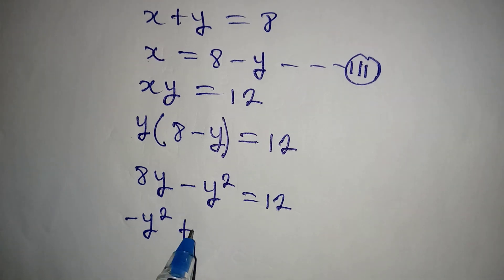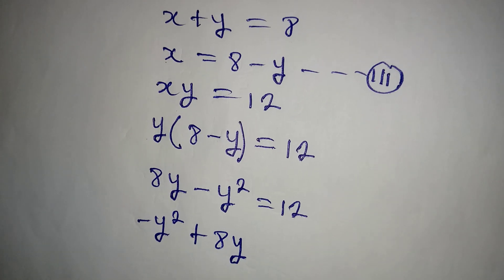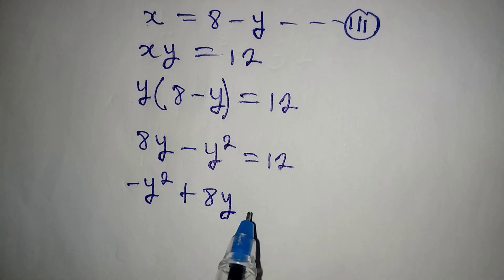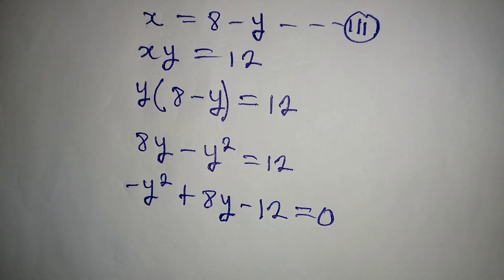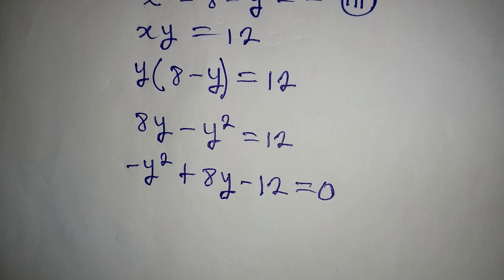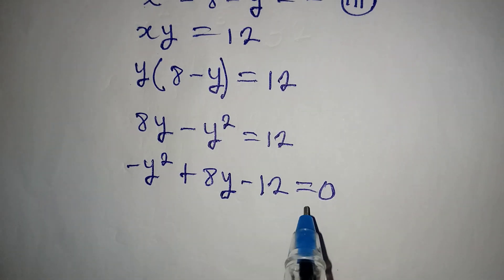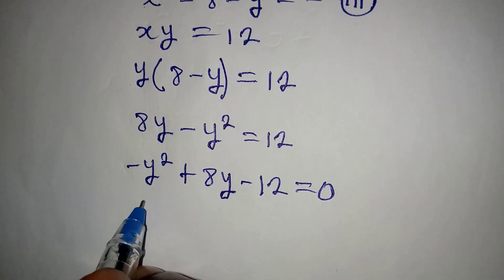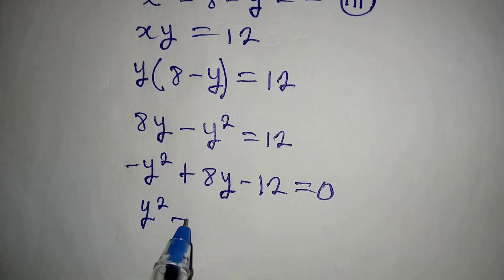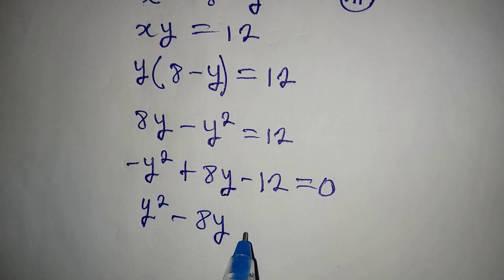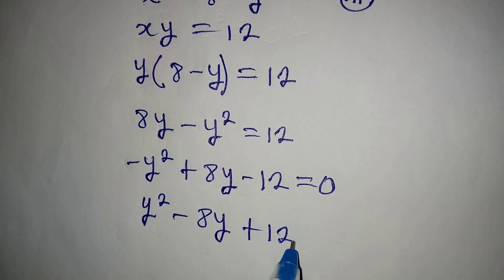To rearrange this we get minus y squared plus 8y minus 12 equals 0. Since a quadratic equation should begin with a positive term, we multiply everything by negative 1, giving us y squared minus 8y plus 12 equals 0.